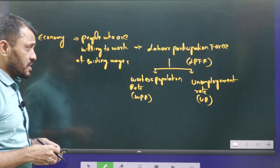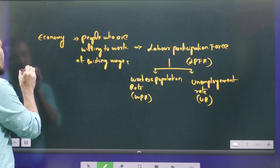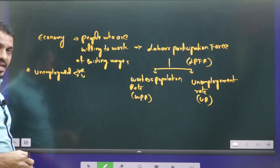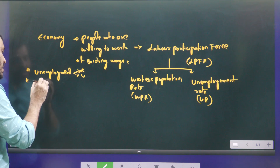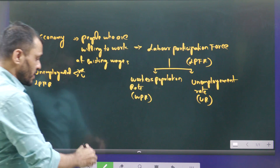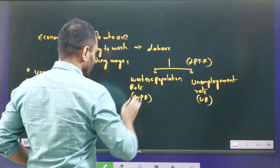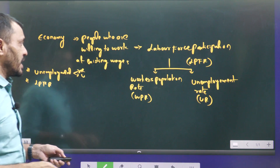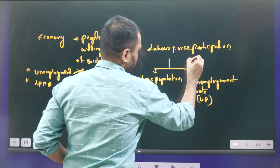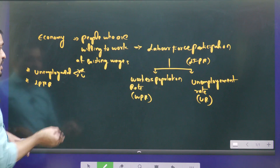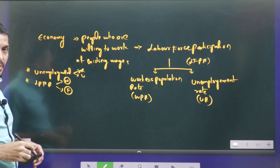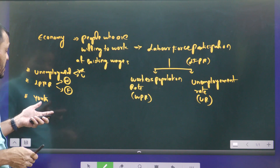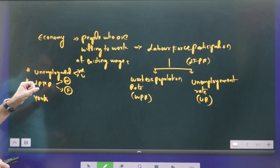Various reports give information related to these parameters. In this video, we are going to discuss about the unemployment rate in rural as well as urban areas, and also the labour force participation rate — both male and female labour force participation — and the youth employment: how is the youth employment and what challenges youth are facing in terms of employment.